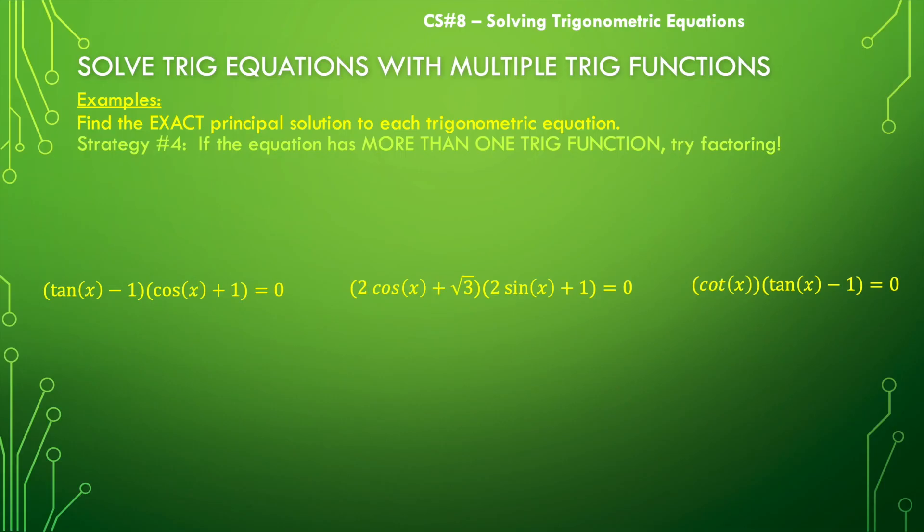We are looking in these examples to find the exact principal solution for each trigonometric equation. Remember, a principal solution is the same as finding all the solutions on one rotation of the unit circle — from zero to two pi, but not including two pi.